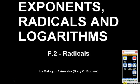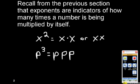This is part 2, Radicals. Recall from the previous session that exponents are indicators of how many times a number is being multiplied by itself. An example is x squared, which really means x times x. And p to the third power is p times p times p.